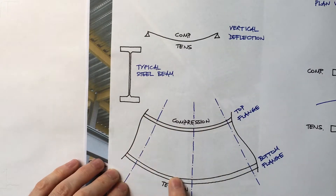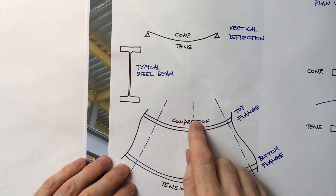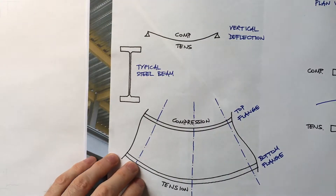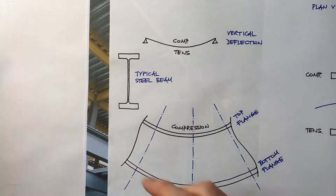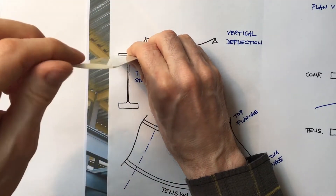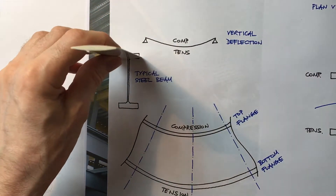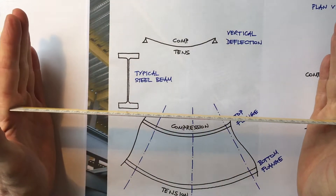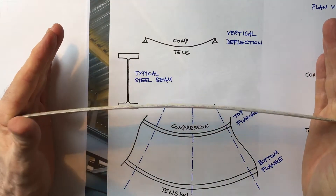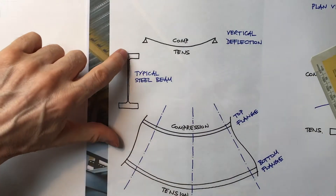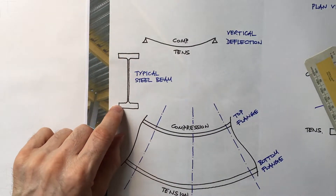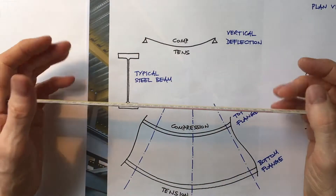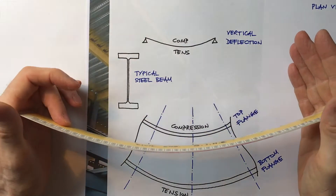The top flange is in compression and the bottom is in tension. Any member in compression is liable to buckling. So if the top flange is represented by that ruler there, it's quite liable to buckle up or down. But it can't because it's restrained by the web and the flange, so the only way it can buckle is to buckle side by side.